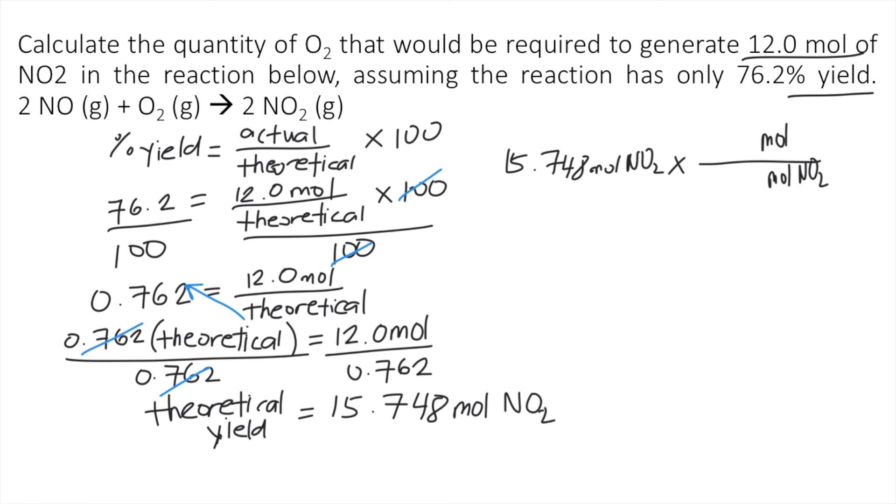So if you look at the balanced chemical reaction, we have here 1 mole of O₂ and 2 moles of NO₂. So that will be the ratio. 1 mole of O₂, 2 moles of NO₂. So the moles of NO₂ would cancel out.